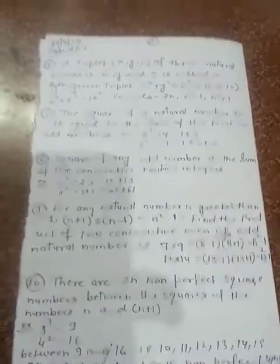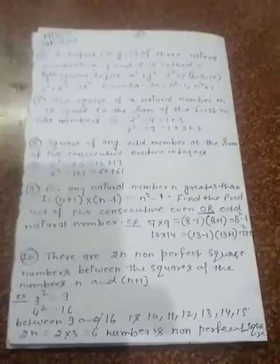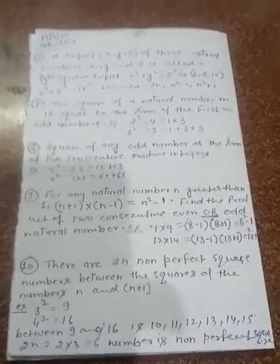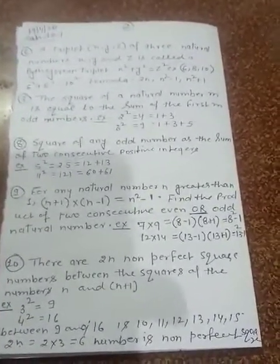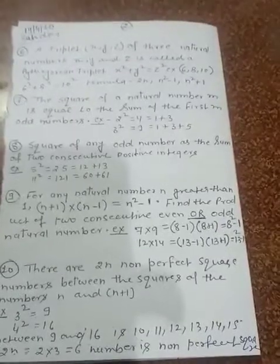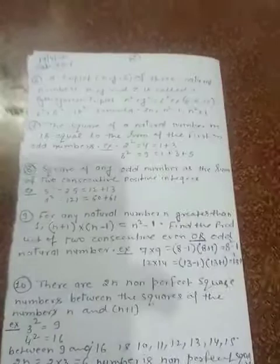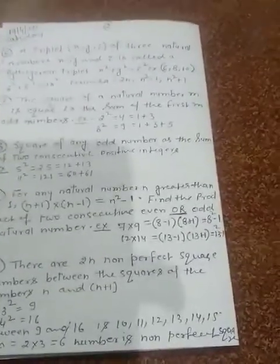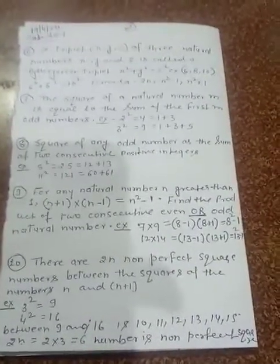Now, for example, we take 3², that is 9, and 4², that is 16. Between 9 and 16, the numbers are 10, 11, 12, 13, 14, 15. If we use here the property formula 2n, 2n means n is 3, 2 × 3 = 6. So here, 6 is a non-perfect square. 6 is a non-perfect square means when we count the numbers 10, 11, 12, 13, 14, 15, the counting number is 6. Thank you.